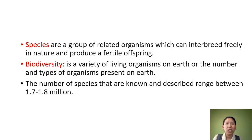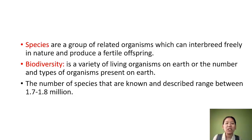The number of species present on Earth forms a variety of life, and we give this the term biodiversity. Biodiversity is the variety of living organisms on Earth, or the numbers and types of organisms present on Earth. Till now, the number of species known and described ranges between 1.7 to 1.8 million — a very huge number.